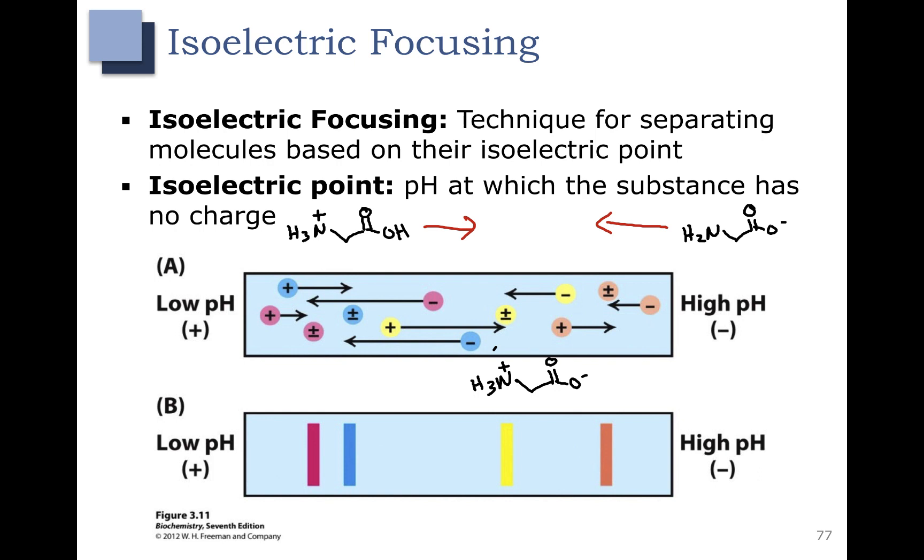The isoelectric point is going to be different for each amino acid. Look at the yellow example here. If you were to apply a mixture, yellow amino acid when it is in high pH becomes negatively charged, then moves towards the positive end. At some point it starts to get a pH that's low enough so it's positively charged.